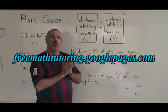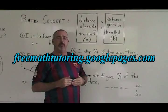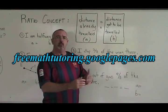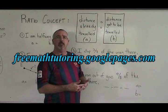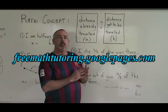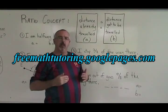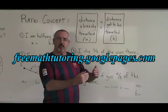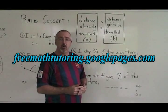If I am going to my friend's house and I have covered 3 fifths of the distance, what is my A? The distance already traveled is 3, so A equals 3. But the distance yet to be traveled I have to calculate. If I have gone 3 fifths of the way, I still have 2 fifths of the distance to cover, so B is equal to 2.